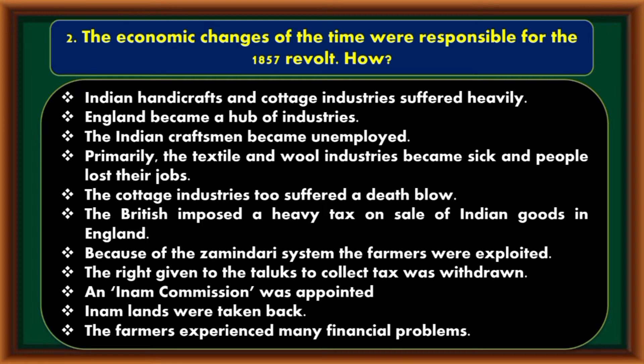The cottage industries too suffered a death blow. The British imposed a heavy tax on the sale of Indian goods in England. Because of the zamindari system, the farmers were exploited. The right given to the taluks to collect tax was withdrawn, an in-arm commission was appointed, and in-arm lands were taken back. The farmers experienced many financial problems.